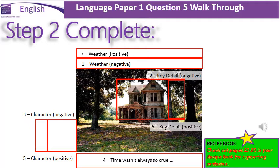My fourth section is going to be a one-sentence paragraph, and I always use the exact same one: 'Time wasn't always so cruel...' I use this paragraph to signal a shift in time. What I really like about this one-sentence paragraph is, first of all, it personifies time, which gets marks. Secondly, it uses an apostrophe correctly, which gets marks. Thirdly, it uses an ellipsis, which also gets marks. And finally, using it as a paragraph for effect — a one-sentence paragraph that changes the tone of my writing.